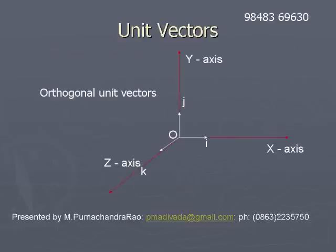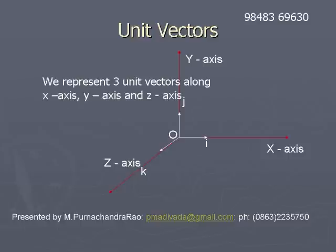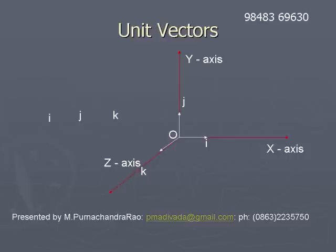Orthogonal unit vectors: we represent three unit vectors along the x, y, and z axes. They are named i, j, and k. The unit vector along the x-axis is termed small i, along the y-axis is termed small j, and along the z-axis is taken as small k.